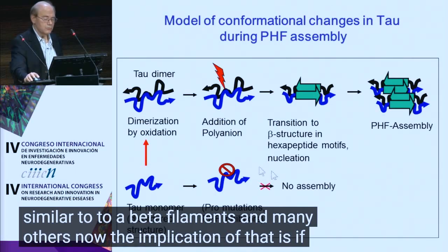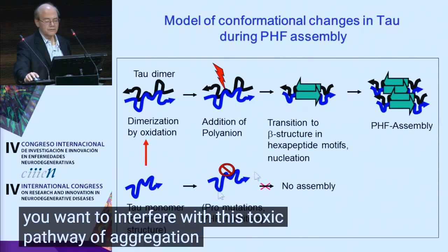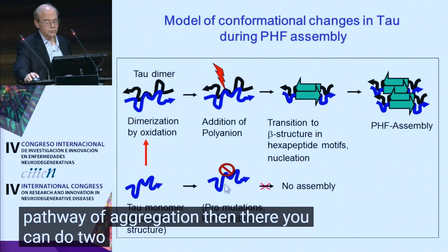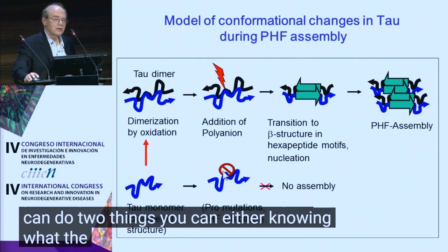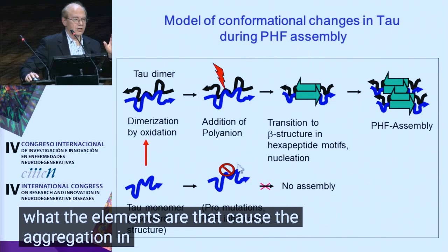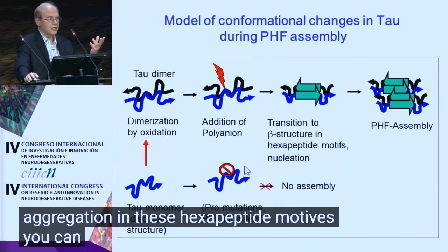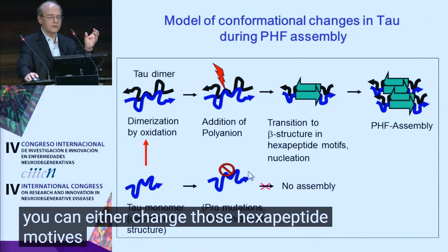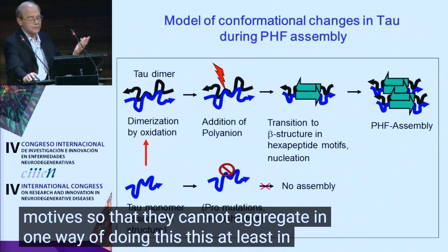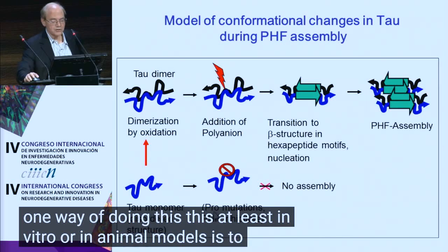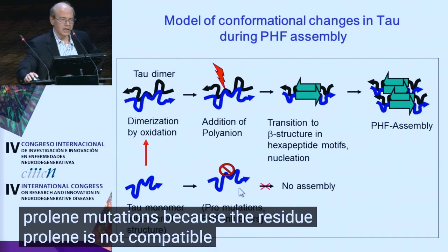If you want to interfere with this toxic pathway of aggregation, then you can do two things. Knowing what the elements are that cause the aggregation — namely these hexapeptide motifs — you can either change those hexapeptide motifs so that they cannot aggregate. One way of doing this, at least in vitro or in animal models, is to insert proline mutations, because the residue proline is not compatible with the beta structure.